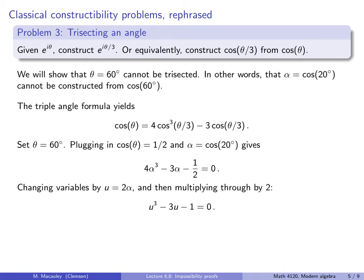One way to do this is to change variables by letting u equal 2 alpha and plugging this back in and multiplying through by 2, which yields the equation u cubed minus 3u minus 1 equals 0. Now I'll let you, as an exercise, verify that this polynomial is indeed irreducible. Now it doesn't follow directly from Eisenstein, so it takes a little bit of work, but it can be done. And what this means is that u is the root of the irreducible polynomial x cubed minus 3x minus 1.